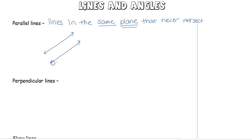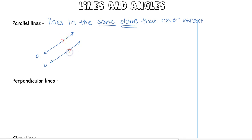When we have parallel lines, I have line A and line B. I mark them as parallel with an additional arrow — it could be an open arrow or a solid arrow. When looking at diagrams, it's important to check the notation to see whether lines are parallel. When I write this, I say that line A is parallel to line B, and that is your parallel symbol.